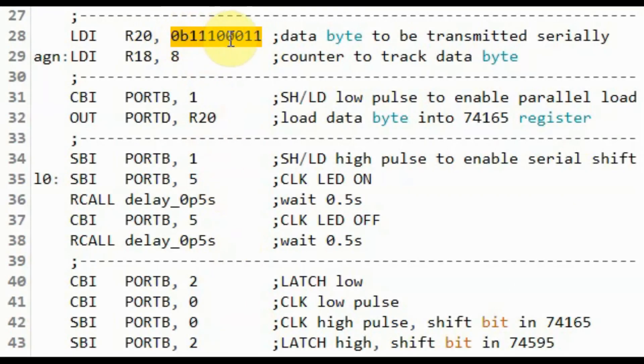The byte to be serially shifted is stored in register R20 and we use R18 as a counter to keep track of the 8 bits. And then we send the low pulse over pin PB1 in order to enable the load pin of the 74165 and then we load the data byte into the 74165.